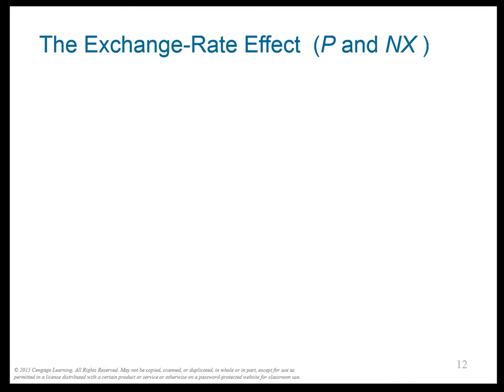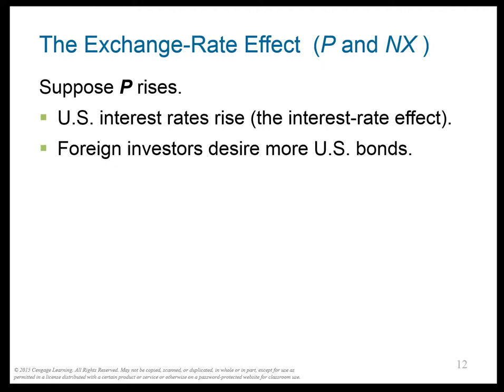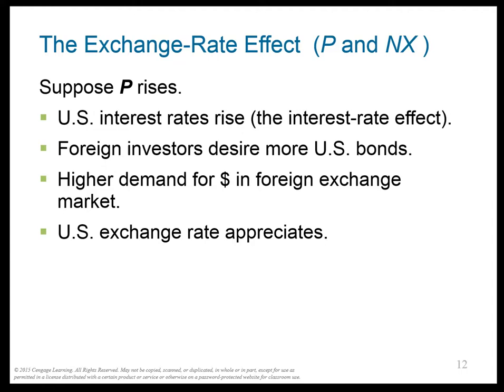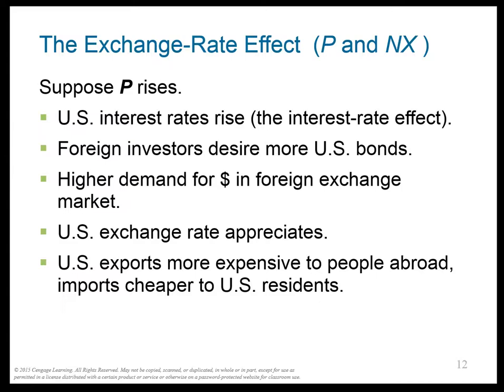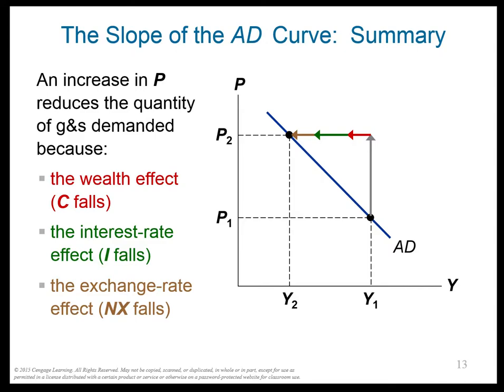What happens to the exchange rate? If P goes up, interest rates rise. That means foreign investors desire more U.S. bonds, so there's higher demand for dollars in the foreign exchange market, which means the U.S. exchange rate appreciates. Goods get more expensive in the United States — U.S. exports are more expensive to people abroad and imports are cheaper to U.S. residents — so NX falls. So all three things — C, I, and NX — fall when the price goes up, and in general when P goes up to P2, Y falls to Y2.